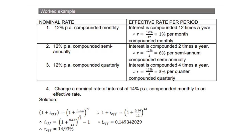Let's look at nominal rate in the first column and effective rate in the second column. Number 1: 12% per annum compounded monthly — the interest rate is compounded 12 times a year, so the rate is 12 divided by 12, which is 1% per month compounded monthly. Compounded semi-annually: 12 divided by 2 equals 6% per semi-annum, compounded semi-annually. Compounded quarterly: 12 divided by 4 equals 3% per quarter, compounded quarterly.